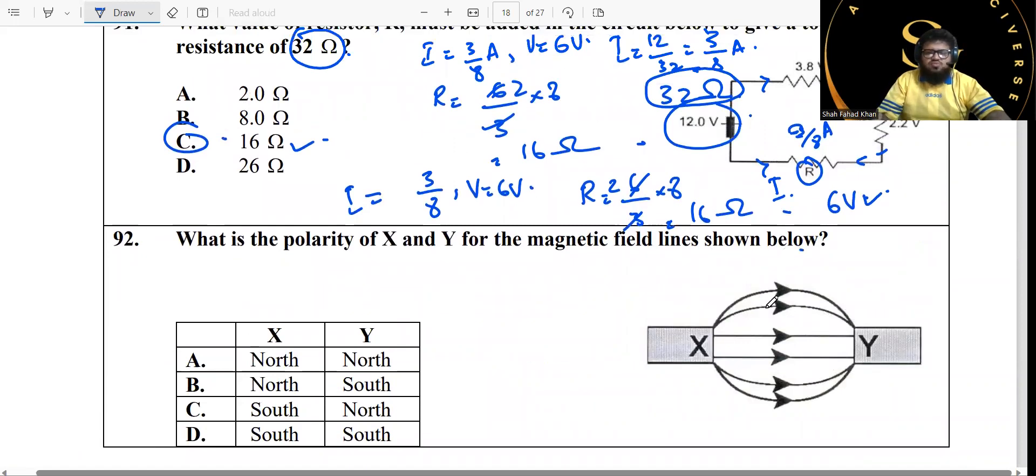Question 92: polarity of X and Y for the magnetic field lines shown below. X is the north pole because it's emitting, and Y is the south pole because that's absorbing. I don't know why this is even a question. So north to south, this is north and that's south. We have option B.